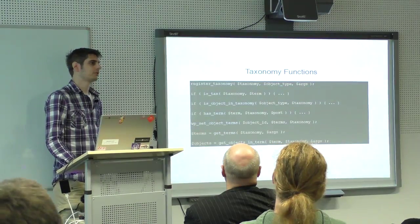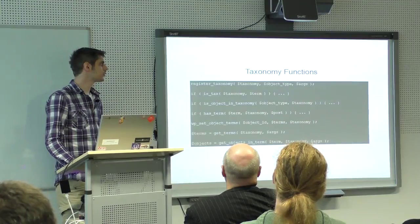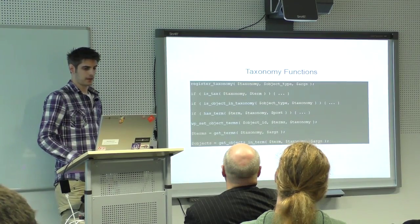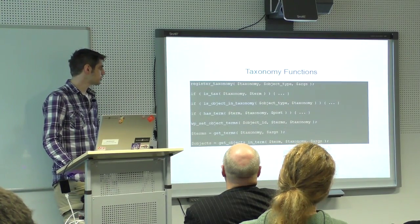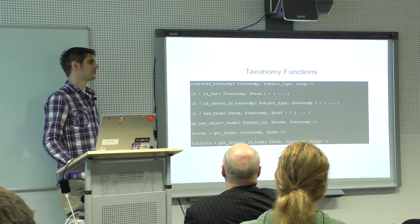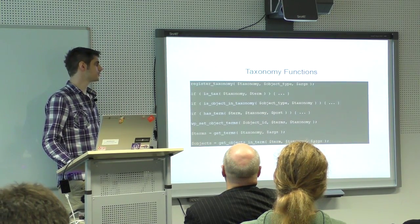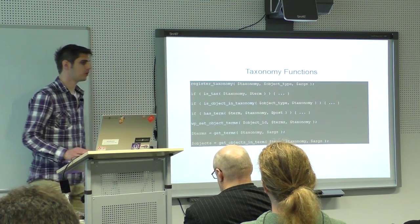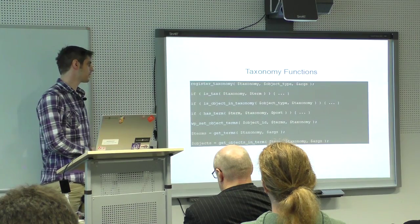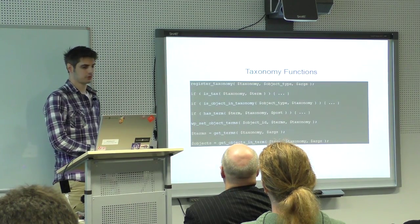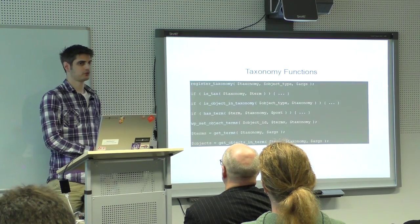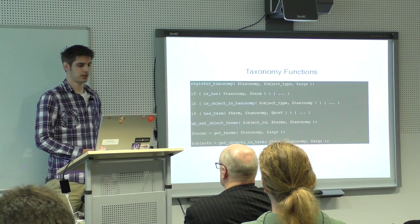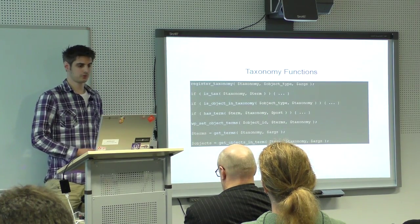There are several functions relating to taxonomy and terms. There's the management function — I can register a new taxonomy. There are conditionals or checkers, so I can check if I'm displaying an archive page for some taxonomy or even some term. I can check if an object belongs to a taxonomy or a term, if some object has a term or so. And there are setters and getters to set and assign terms to objects, or get some terms or whatever.